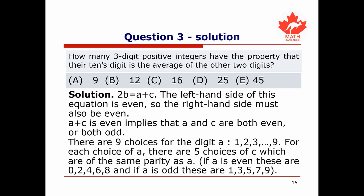There are nine choices for digit A — namely 1 through 9 — since A cannot be zero (that would make it not a three-digit number). For each choice of A, there are five choices of C with the same parity as A. For example, if A is even, C can be 0, 2, 4, 6, or 8. If A is odd, C can be 1, 3, 5, 7, or 9.